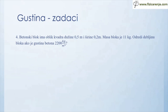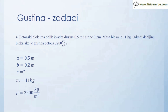Betonski blok ima oblik kvadra, dužine 0,5 metara i širine 0,2 metara. Masa bloka je 11 kilograma. Odredi debljinu bloka ako je gustina betona 2200 kg/m³. U zadatku mi je dato da je jedna ivica 0,5 m, a druga 0,2 m, i traži se kolika je treća. Betonski blok je u obliku kvadra sa dimenzijama a, b i c — a i b su date, a c se traži. Data mi je masa bloka 11 kg i gustina 2200 kg/m³.